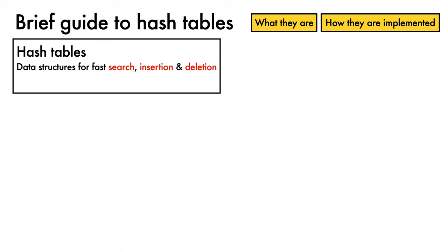Hash tables are, in short, data structures for fast search, insertion, and deletion operations.